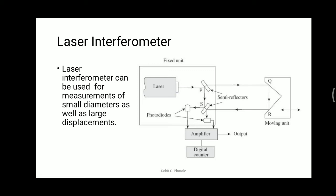The laser interferometer can be used for measurements of small diameters as well as large displacements. The moving unit is operated with a knob — rotating the knob causes the moving unit to travel in a transverse, forward, or backward motion.